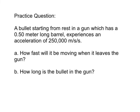Here's a practice question: a bullet starting from rest in a gun with a 0.5-meter-long barrel experiences an acceleration of 250,000 meters per second squared. Part A: how fast will the bullet be moving when it leaves the gun? Part B: how long is the bullet in the gun? Show your answer tomorrow.